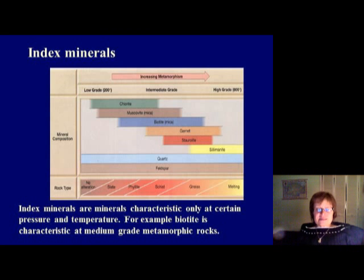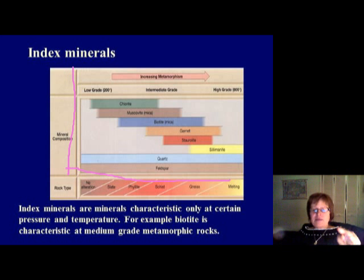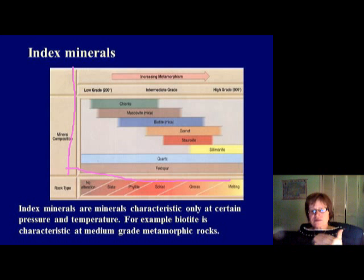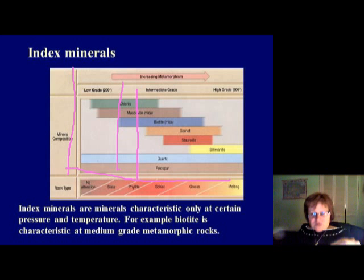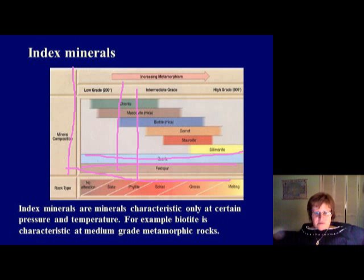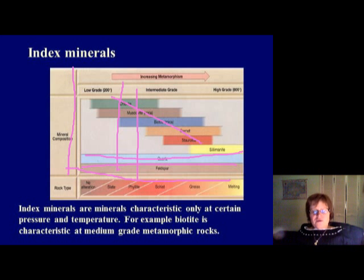This section is about index minerals. As pressure and temperature increase during metamorphism, minerals become unstable and recrystallize into more stable minerals. When you look at a metamorphic rock and identify its minerals, you can tell the pressure-temperature environment it formed in. Minerals that are sensitive to pressure and temperature are called index minerals. Quartz and feldspar form in any metamorphic environment, but the other index minerals indicate the specific grade of metamorphism.